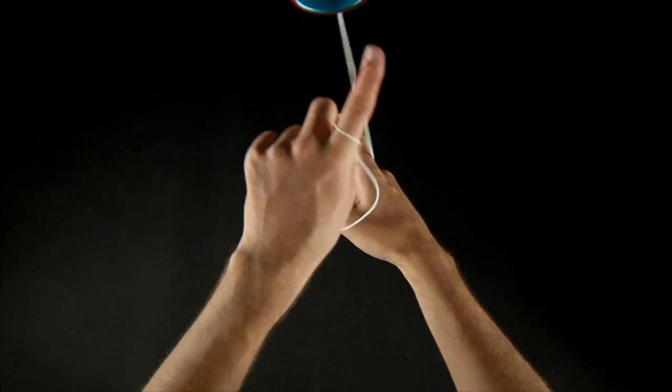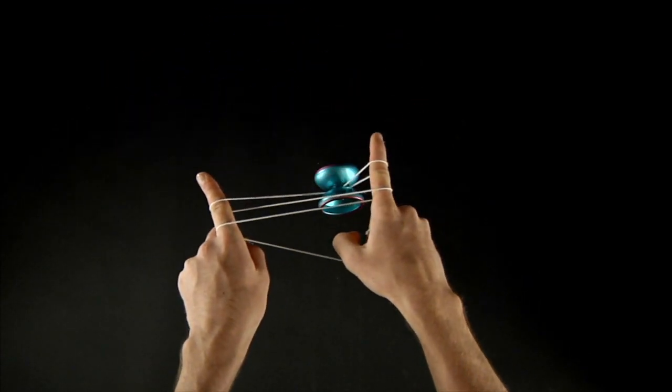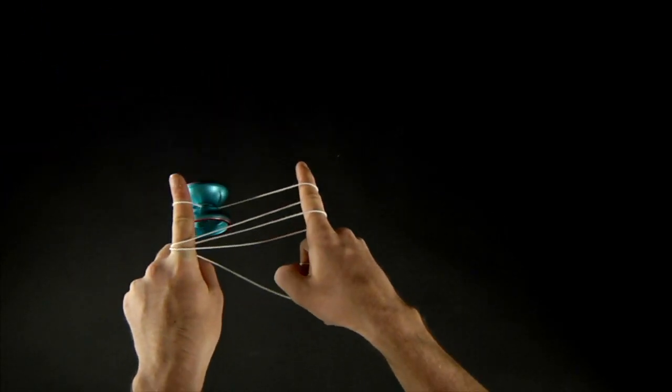Repeat this motion to the other side and land in a double or nothing. Repeat again landing in a double or nothing and its brother. Repeat once more to finally land in a triple or nothing.